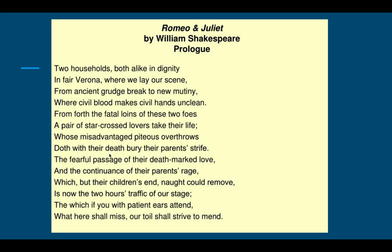'Doth with their death bury their parents' strife' — we find out that they die, and in their death the two families' feud goes away. 'The fearful passage of their death-marked love' — 'death-marked' is another reference to fate — 'and the continuance of their parents' rage, which but their children's end naught could remove.' Basically, the only way for this feud between these two families to end is the death of their children.